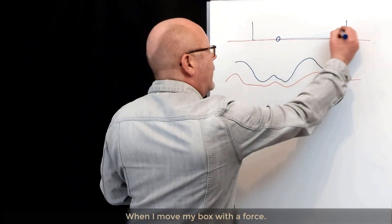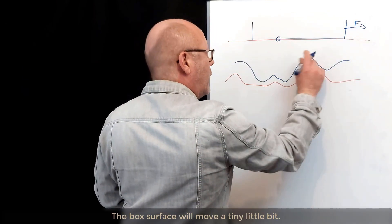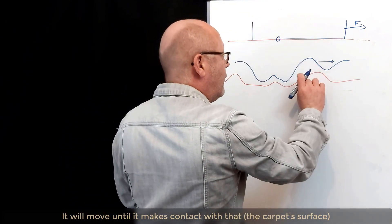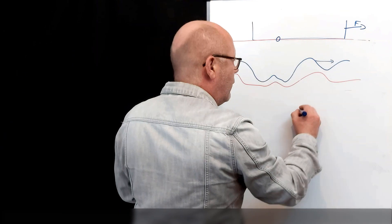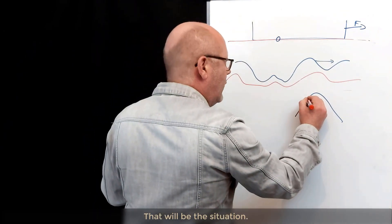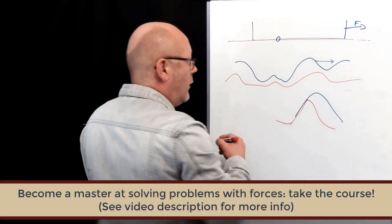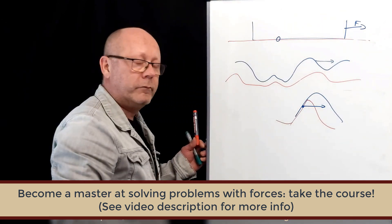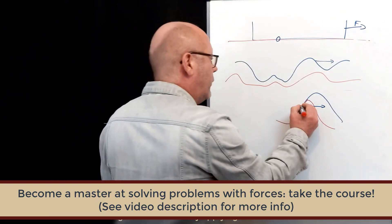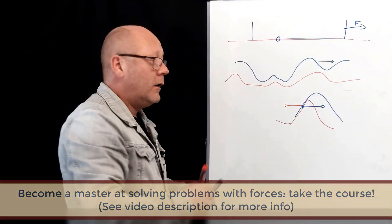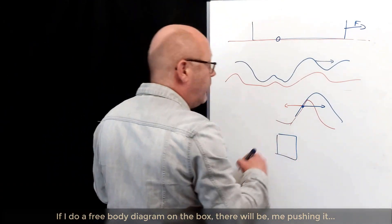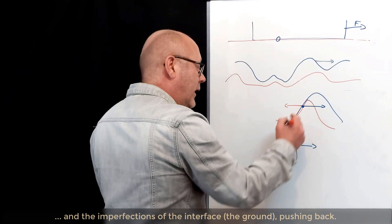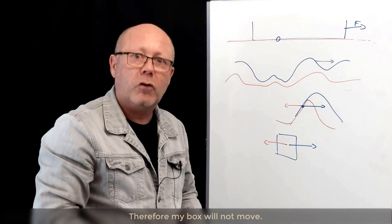When I move my box, like that with the force, this thing will move a tiny little bit. It will move until it reaches in contact with that, so I will be in this situation. At this point, there will be a force of the box on the ground, and the ground will react by applying a force on the box. So if I do the free body diagram on the box, there will be me pushing it, and the imperfections of the interface pushing back. Therefore, my box will not move.